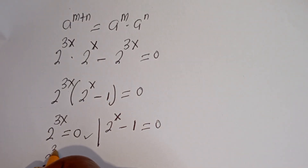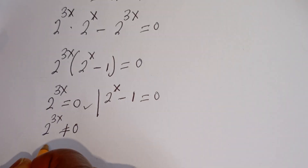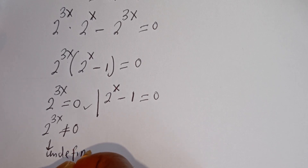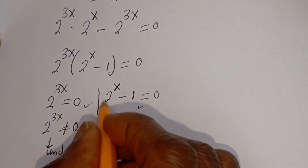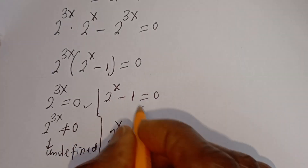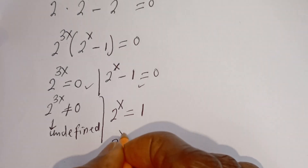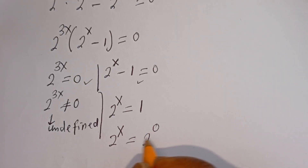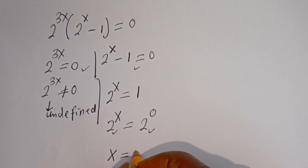From here, 2 to the power of 3x cannot be equal to zero, so this is undefined and it is rejected. So we consider the second case. From here, we have 2 to the power of x is equal to 1. Now, 2 to the power of x equals 1 is 2 to the power of zero, because anything raised to the power of zero is one. We have the same base, 2, so x is equal to zero.